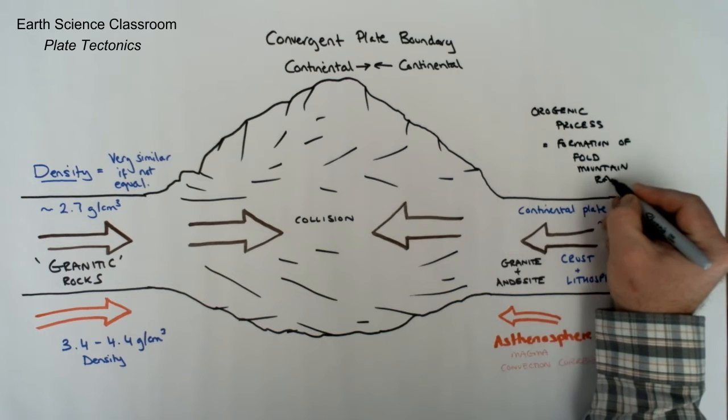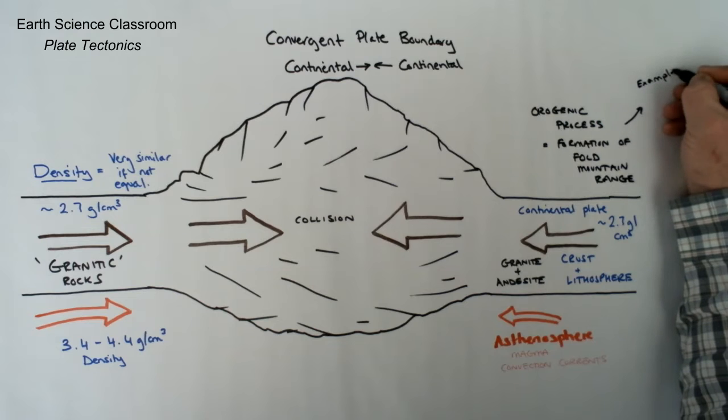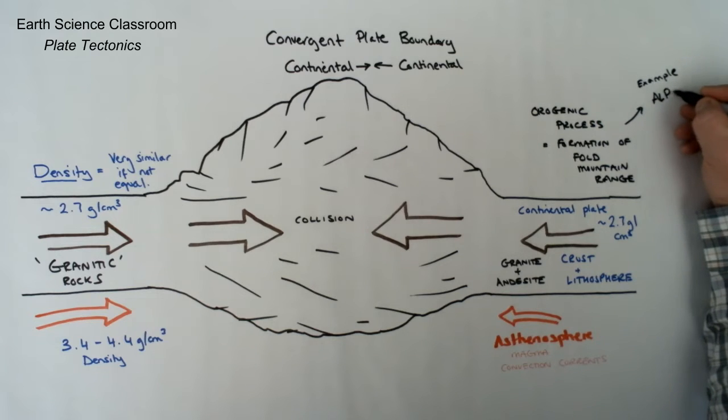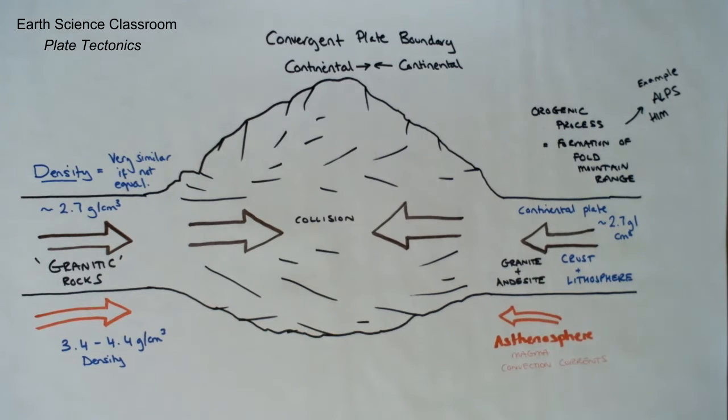This orogenic effect of pushing the rock up in the air creates a huge mountain range with high relief, high elevation, and it also goes deeper down in the asthenosphere as it is a larger mass of rock.